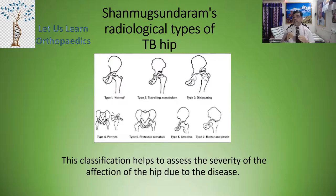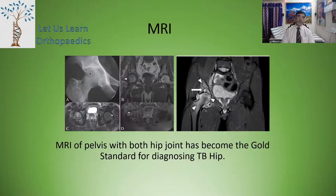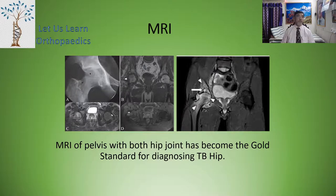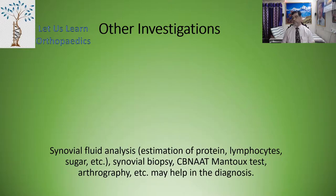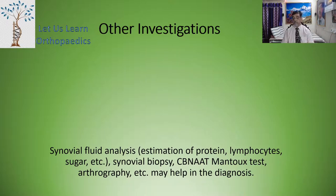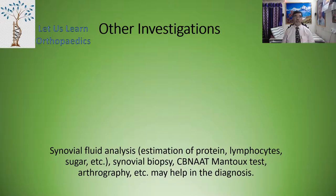This classification helps to assess the severity of the affection of the hip due to the disease. MRI of the pelvis with both hip joints has become the gold standard for diagnosing tuberculosis of the hip. Other investigations include synovial fluid analysis — estimation of protein, lymphocytes, sugar, etc. — synovial biopsy, CBNAAT (the latest test being advised), the Mantoux test, or APTC, which may all help in the diagnosis of TB hip.